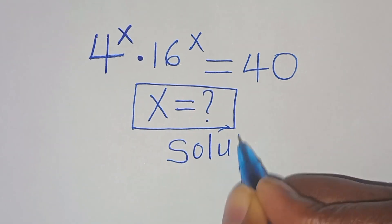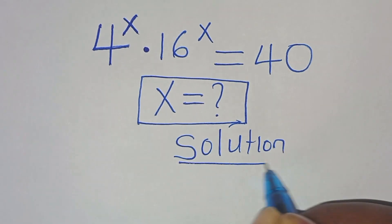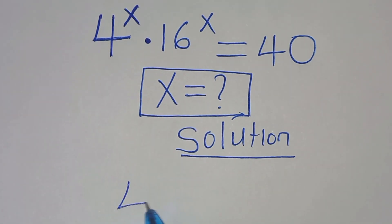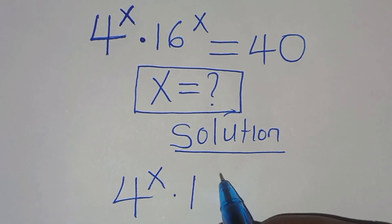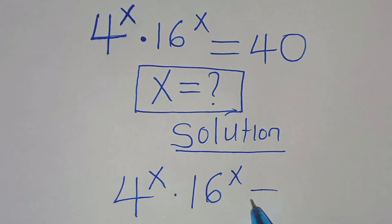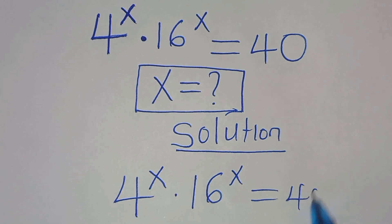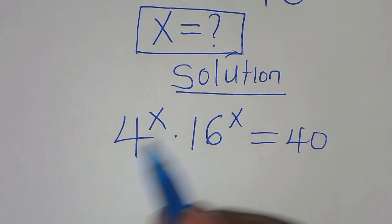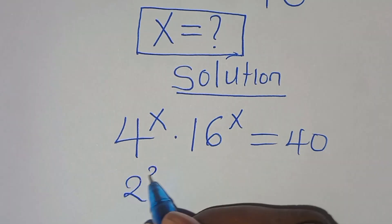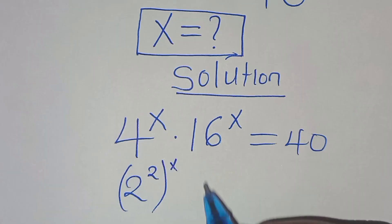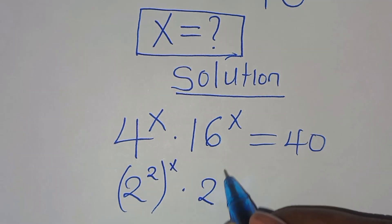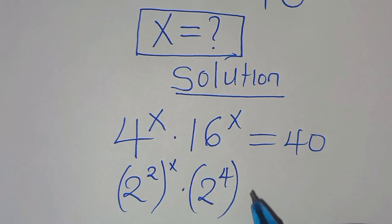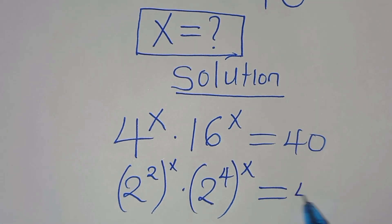Now we have 4 to the power of x multiplying by 16 to the power of x, this is equal to 40. We can express 4 as 2 to the power of 2, raised to the power of x, multiplying by 16, which is 2 to the power of 4, raised to the power of x, this is equal to 40.